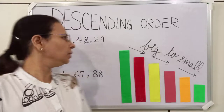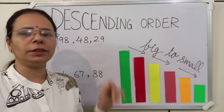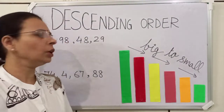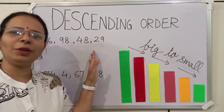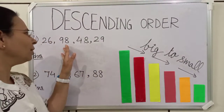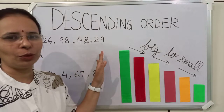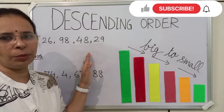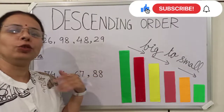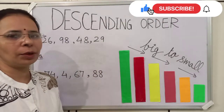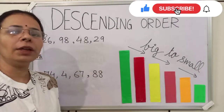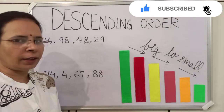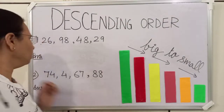Now we will arrange this set of numbers in descending order. First, we have to make sure that all the numbers are two digit. You can see here, all the numbers are two digit. So, first we have to find the biggest number among these numbers. To find the biggest number, we will compare their tens place number. So first we will underline the tens place number.